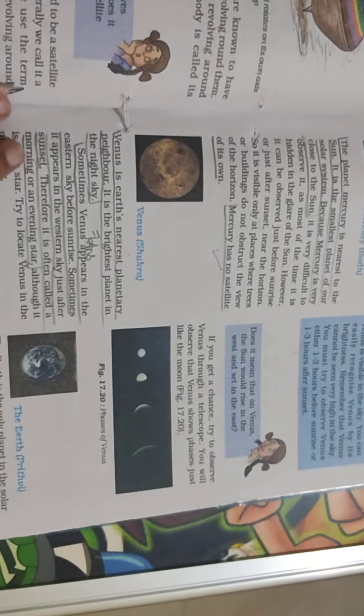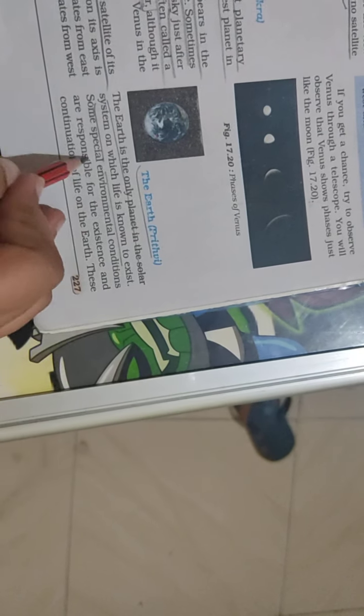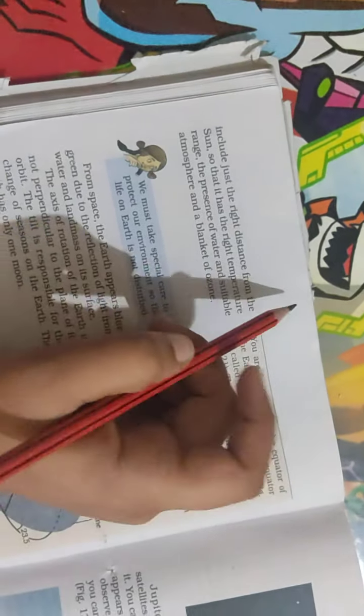The next planet is Earth. Earth is the only planet in the solar system on which life is known to exist. Some special environmental conditions are present here that allow life to exist, like oxygen, water, and the right temperature for survival.